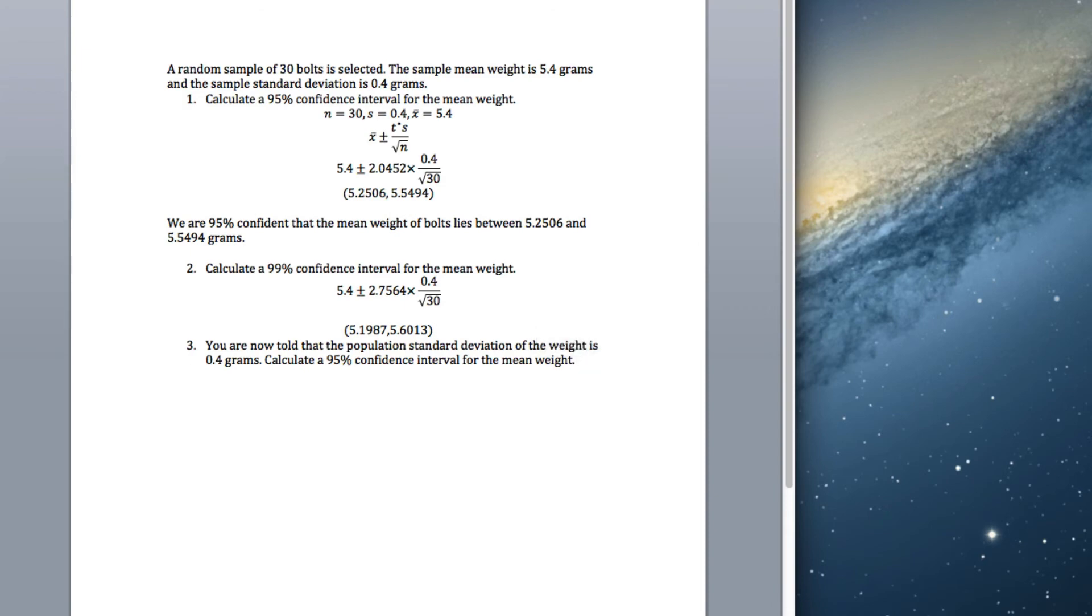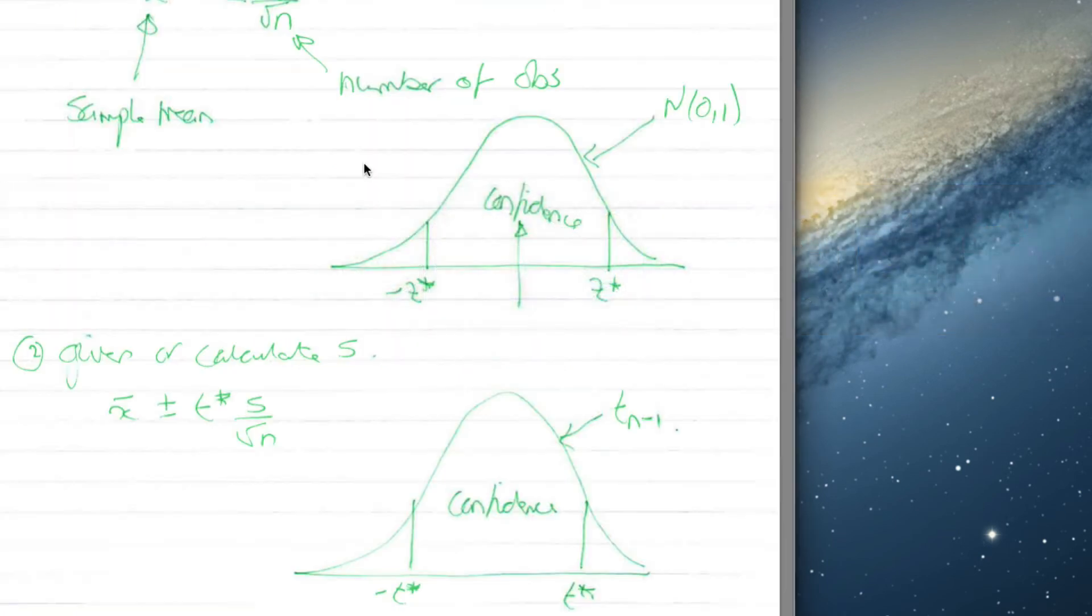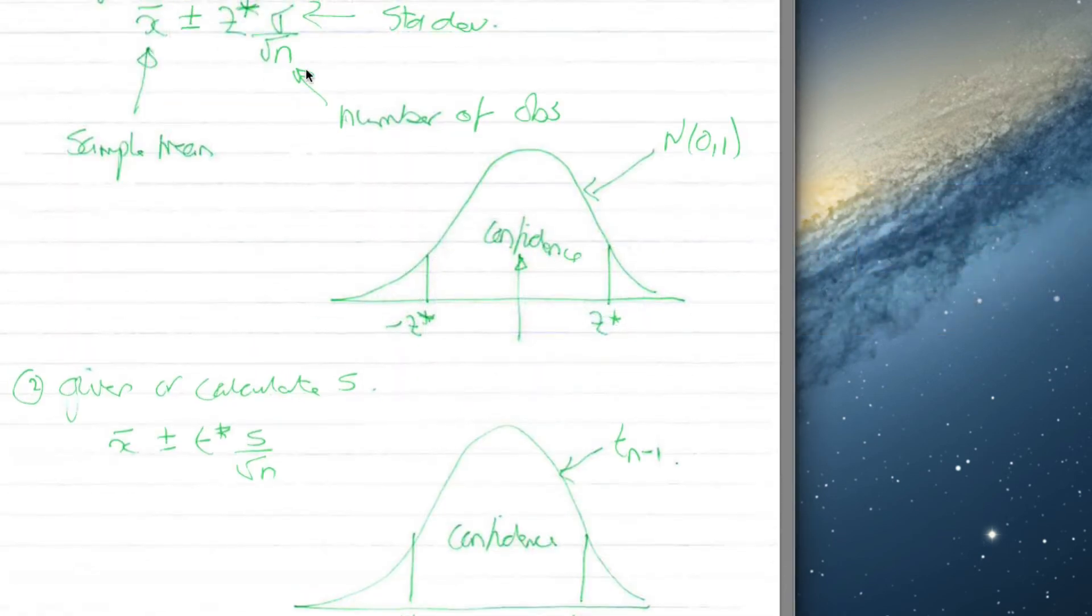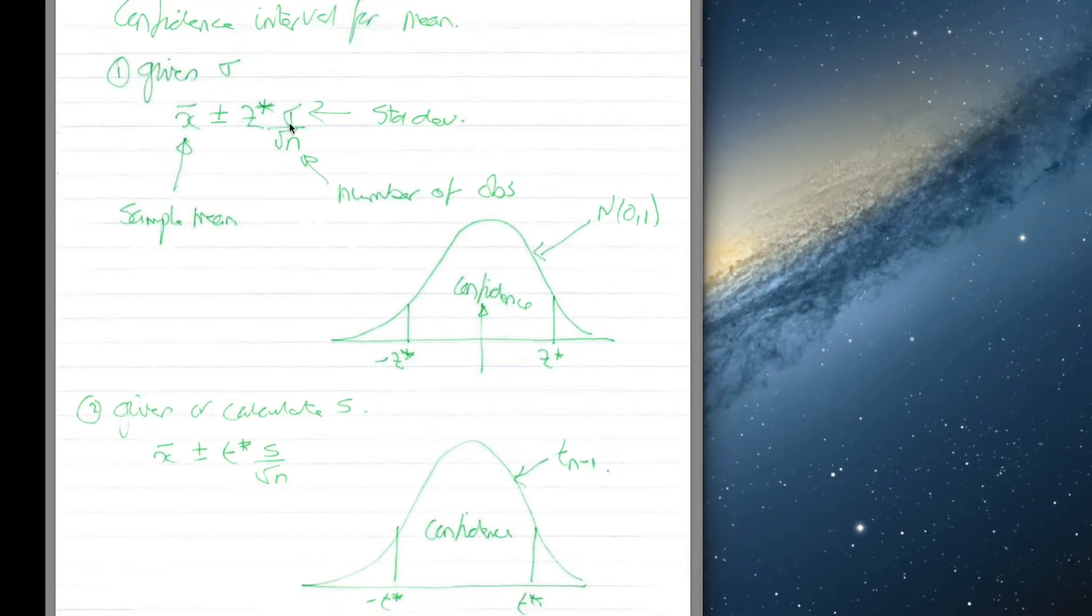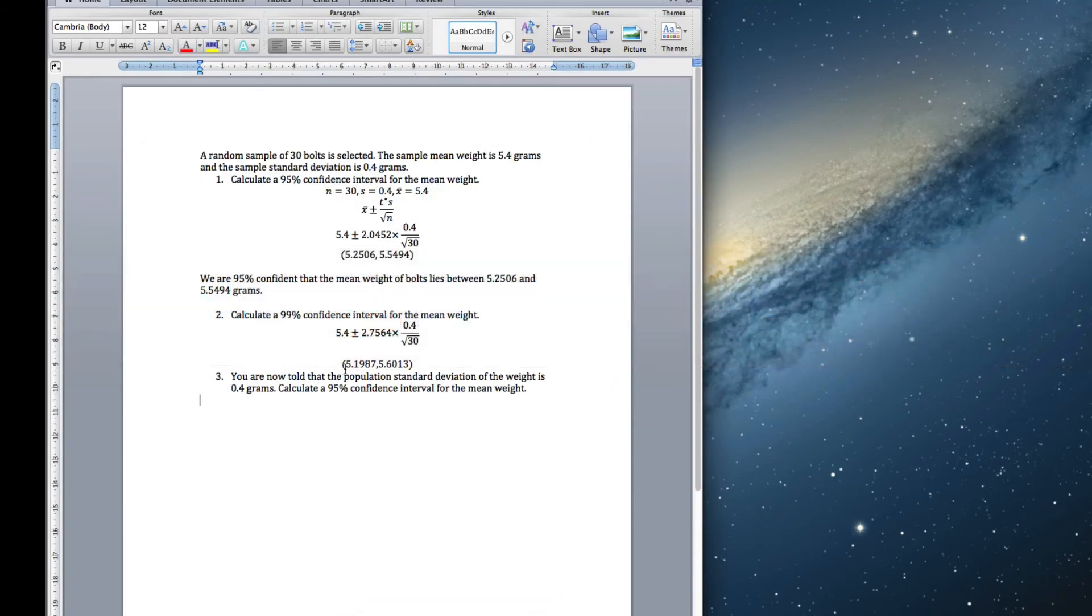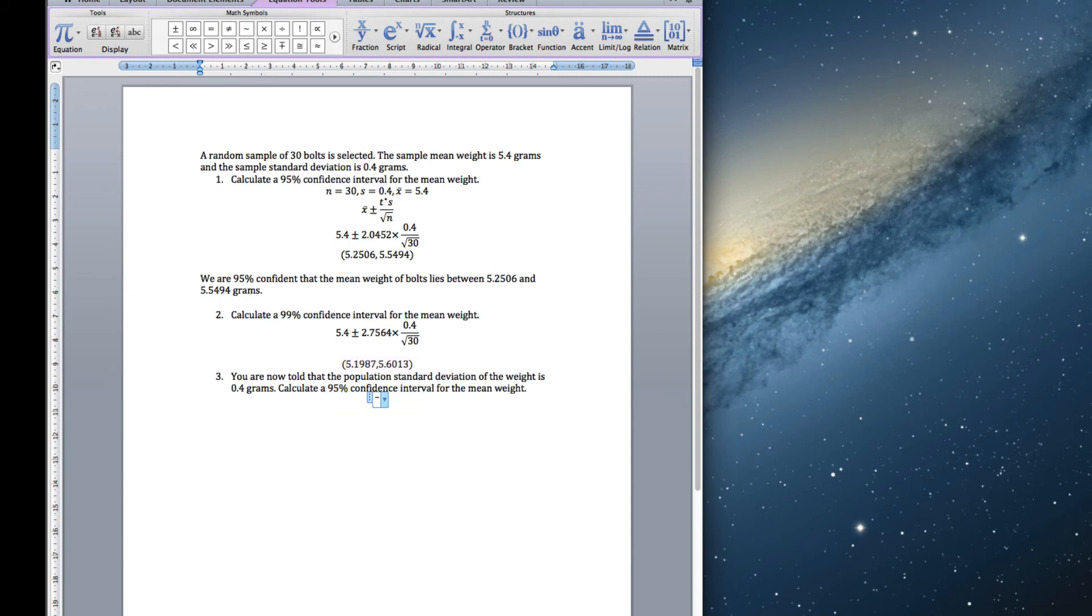So, the final form is the case where we're actually given the population standard deviation. So, in this case, now, we're given sigma, population standard deviation. So, it's a very similar calculation. We still have the sample mean. We still have our standard deviation over our root n, but we have a different cutoff point. And, instead of putting in s, we now put in sigma. So, we're going to have x bar plus minus z star, we're going to have sigma divided by square root of n.